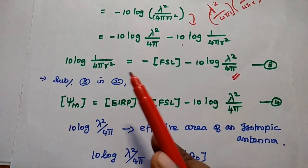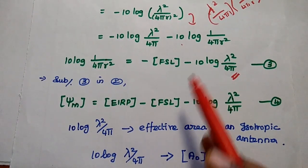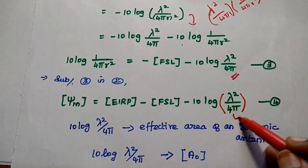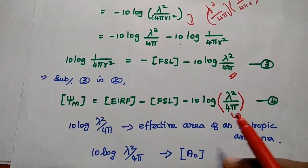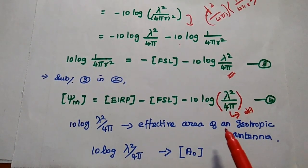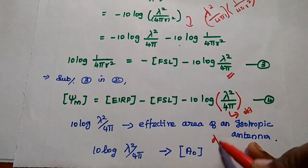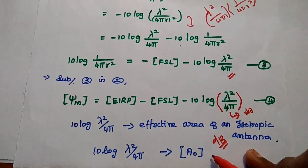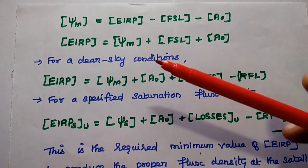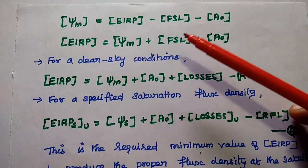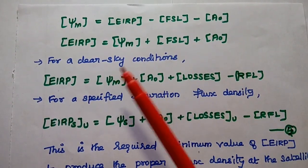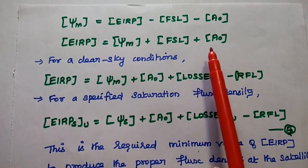In this expression, 10·log(λ²/4π) represents the effective area of an isotropic antenna in dB, denoted as A₀. So the fourth equation becomes: ψ_M = EIRP − FSL − A₀. From this, we can get: EIRP = ψ_M + FSL + A₀.